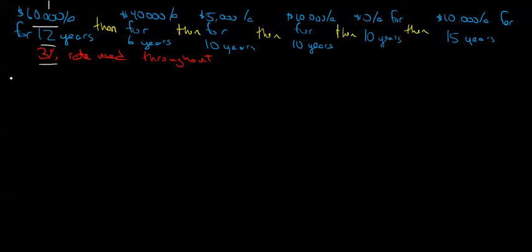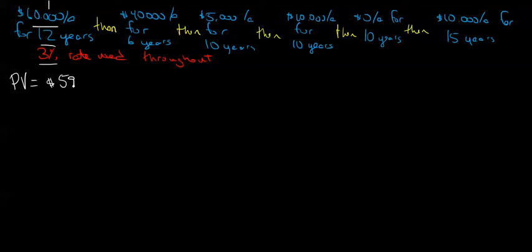Knowing that we need sixty thousand dollars a year for 12 years at a 3% discount rate, we could do a present value calculation. If you haven't covered the financial calculator yet you'll want to do that before going too far with this video, or you can just take my word that the present value here is going to be five hundred ninety-seven thousand two hundred and forty dollars — that's the amount of money needed at a 3% rate for 12 years to generate sixty thousand dollars of annual income.